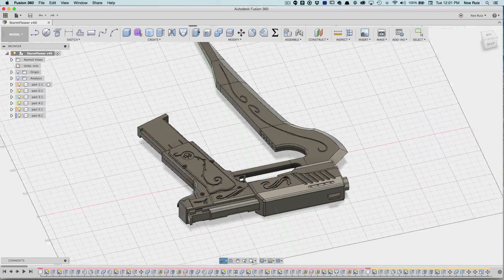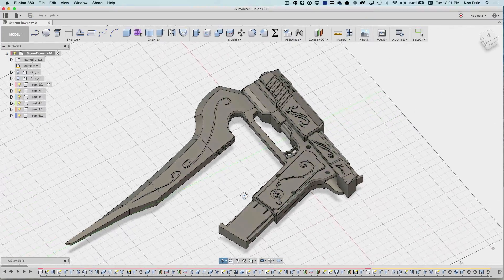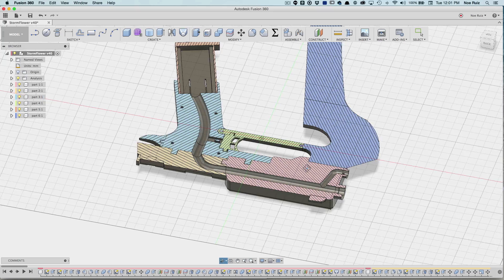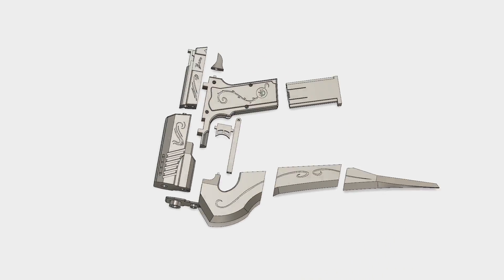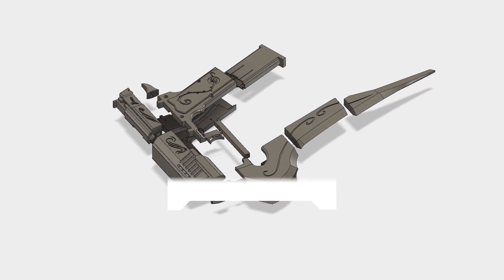I designed the Stormflower in Fusion 360. I built the prop using components and made sure to create channels so that I could run the wires through the various parts. I also separated them into pieces so that I wouldn't need any support material when 3D printing.